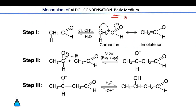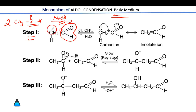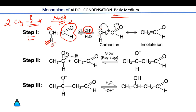Let's start with the base-catalyzed mechanism. As an example, let's take ethanal — two molecules of ethanal treated with NaOH. In the first step, the OH⁻ removes the alpha hydrogen from the aldehyde group because it is acidic. This hydrogen is acidic because the resulting negative charge is resonance-stabilized — the conjugate base is stabilized through resonance, making this hydrogen acidic.